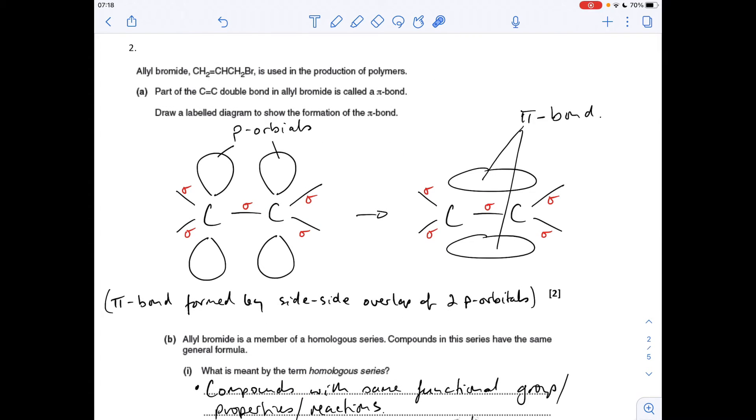Question 2, part A, we've got to draw a label diagram to show the formation of a pi bond. I've just written up there what a pi bond is, or how it forms. It's formed by the side-to-side overlap of two p orbitals. Didn't need to write that for the answer, it was purely the diagram, but I would always just keep that in the back of your mind. So I've drawn the sigma framework between the two carbons. You don't need to label those sigma bonds up, but I would always encourage students to do that.